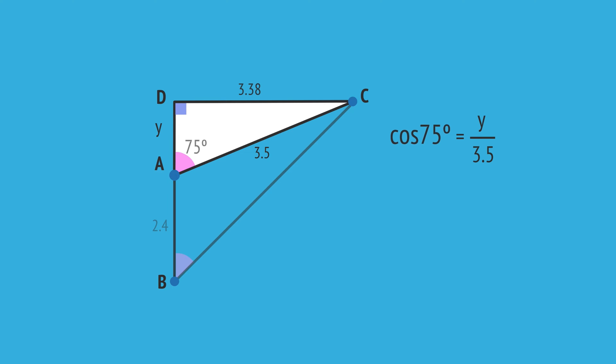Using this same triangle, we write the cosine ratio for 75 degrees, which equals the adjacent, y, over the hypotenuse, 3.5. Rearranging for y and using a calculator gives us y equals 0.91 kilometers.